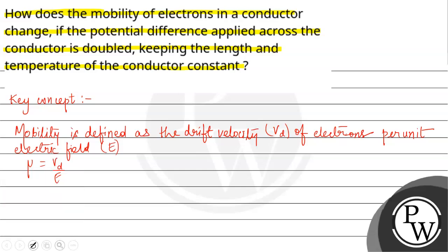Now, here we have a conductor. When you connect this to a battery supply, the free electrons in the conductor move with drift velocity Vd.